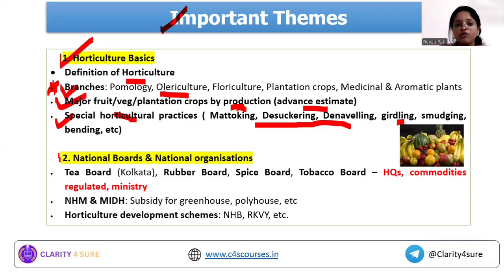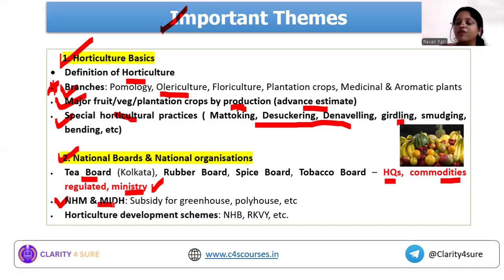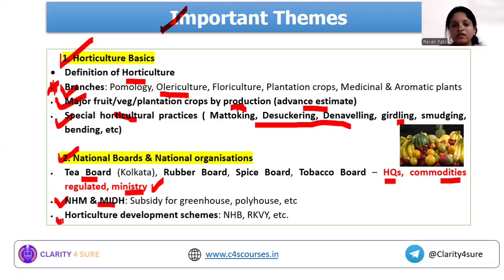For national boards and organizations, cover tea board, spice board, tobacco board — you need to understand their headquarters, the commodities they regulate, and under which ministry each board falls. Also cover NHM, MIDH, and different schemes and organizations. You need to cover horticulture from a current affairs perspective as well.